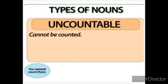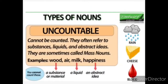Now we are going to the next one: uncountable nouns. Uncountable nouns means things that cannot be counted. Examples: wood, air, milk, happiness. A substance, material, liquid, or abstract idea — can you count a liquid, or an abstract idea, or a substance? That comes under uncountable nouns. For example, rain — we cannot count raindrops; we cannot count cheese; we cannot count blood drops. So words that are uncountable are called uncountable nouns.